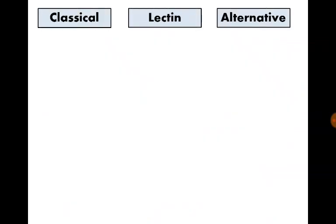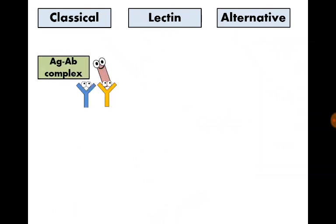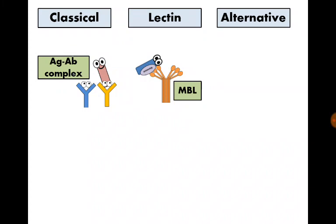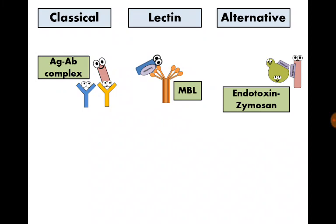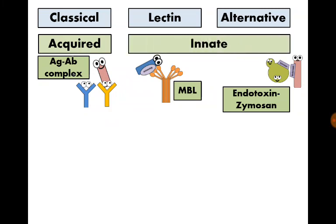What are the differences between the three pathways? The trigger for the classical pathway is an antigen-antibody complex, while for the lectin pathway it is binding of a bacteria carrying mannose to mannose-binding lectin in serum. For the alternative pathway, the trigger is attachment of C3B in serum to a bacterial endotoxin or fungal zymosan. The classical pathway is considered part of the acquired immunity, while the two other pathways are considered part of the innate immune response.